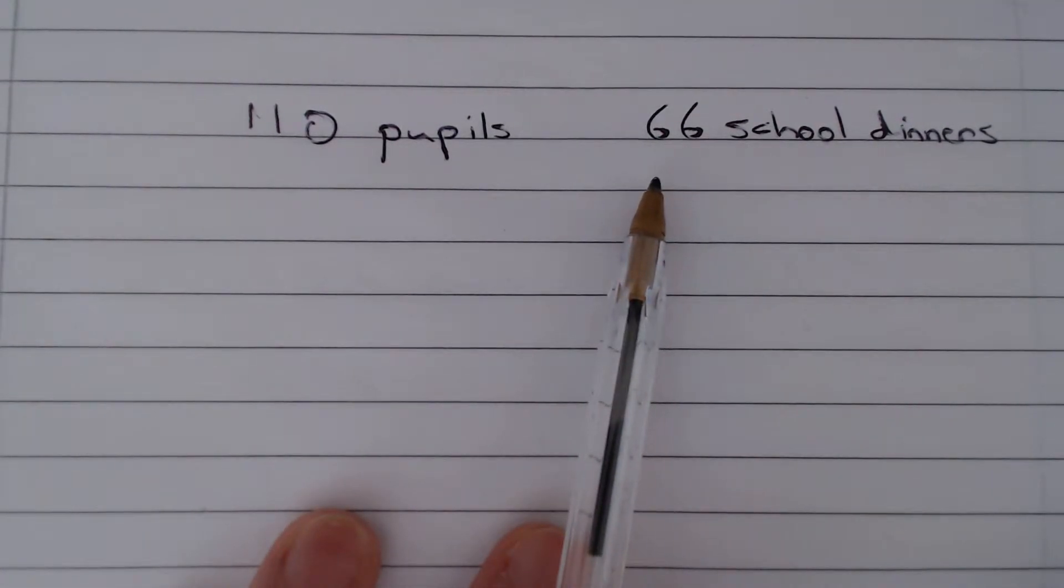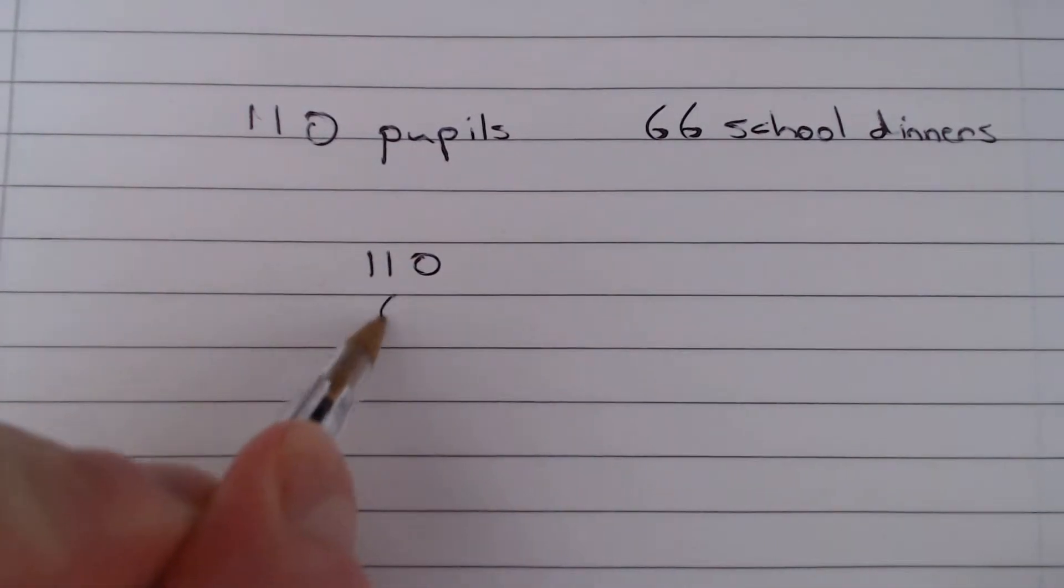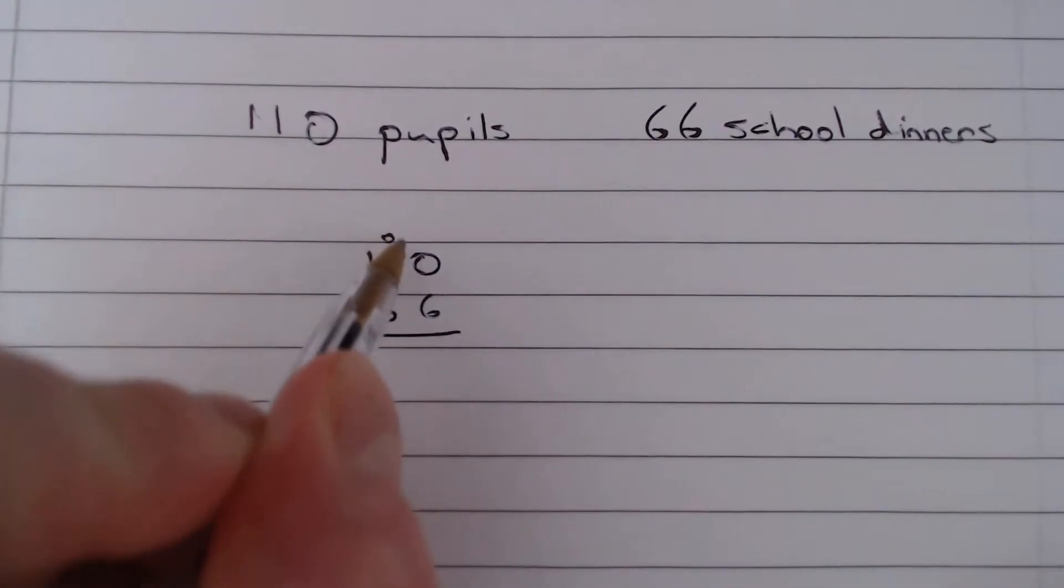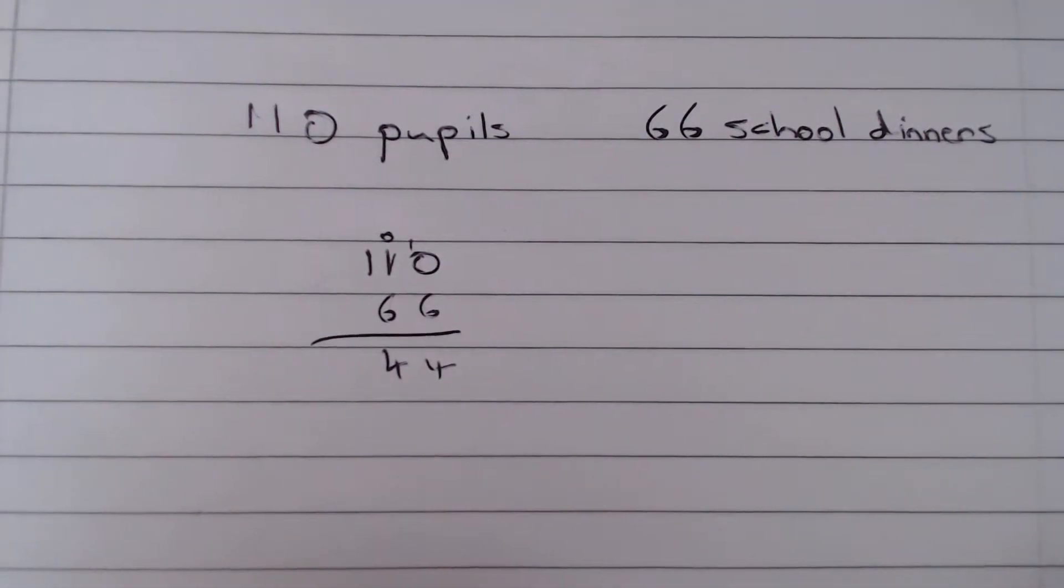Well if 66 pupils had school dinners, then 110 minus 66, and if we do that we get 44, so we get 44 pupils that do not have school dinners.